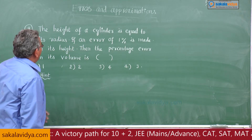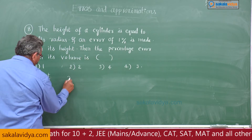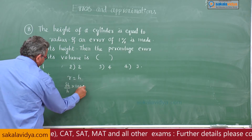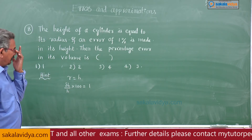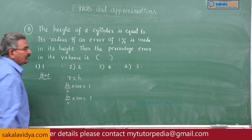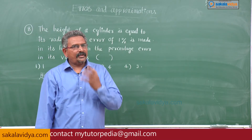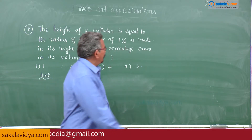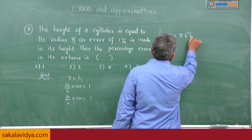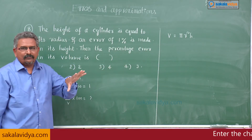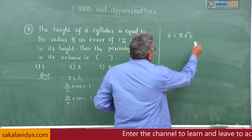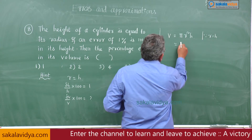What is given: height is equal to radius, r equals h, and delta h by h into 100 is 1 percent. We need to calculate delta v by v into 100. The volume of the cylinder is pi r squared h. Since r is replaced by h, this becomes pi h cubed.